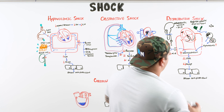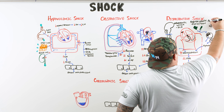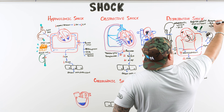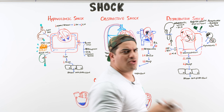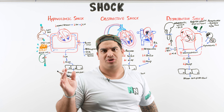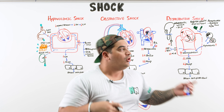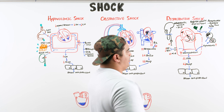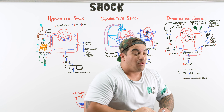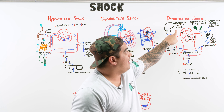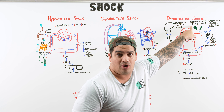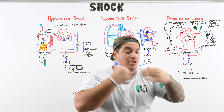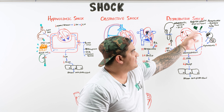The last cause of distributive shock is anaphylaxis — a severe allergic reaction, such as a bee sting, food allergy, or contrast allergy. The allergic reaction activates the immune system, releasing cytokines that cause vasodilatory shock. Differentiating: neurogenic shock has a spinal cord injury; septic shock has obvious infection, leukocytosis, fevers; anaphylaxis has angioedema, airway obstruction, hives, and recent allergen exposure.